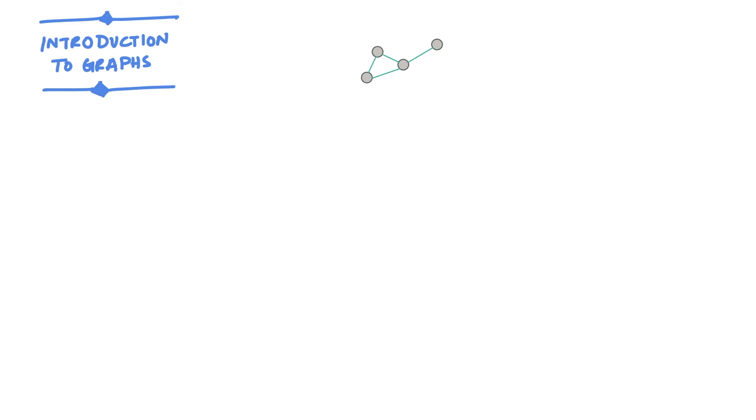Graphs are an intuitive way to represent information about the world as a set of entities and relationships. Entities can be anything ranging from people, objects, places, websites, etc.